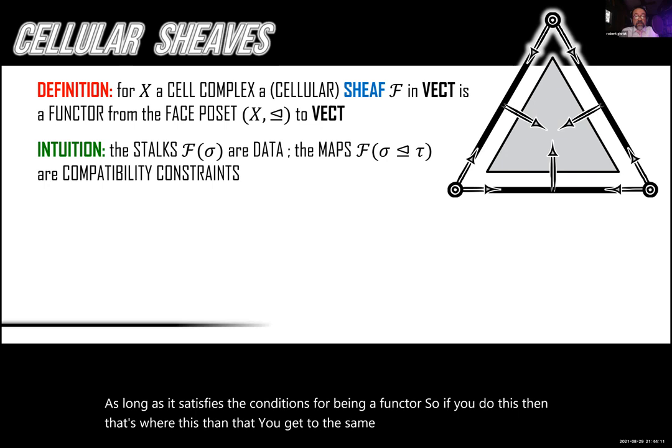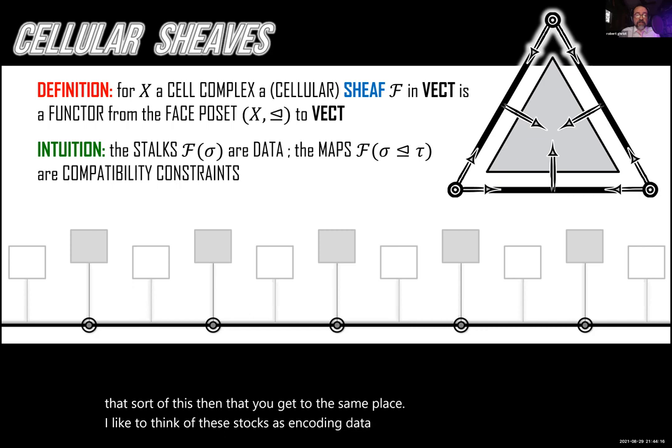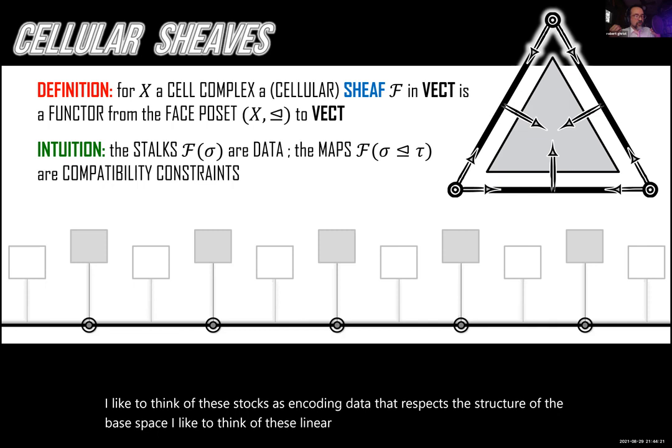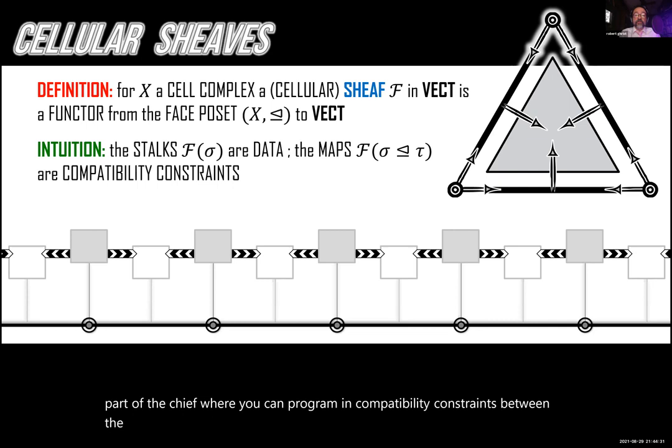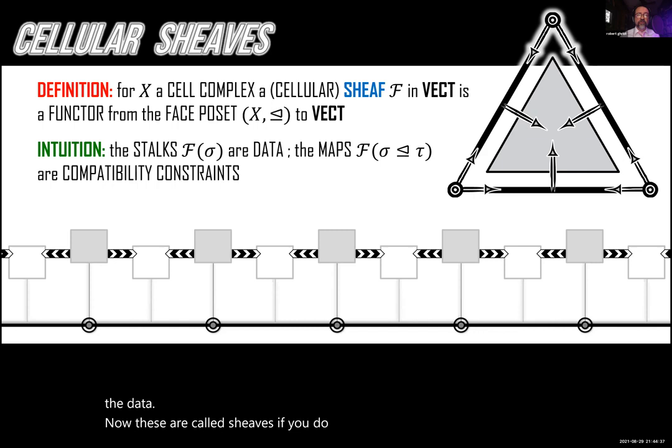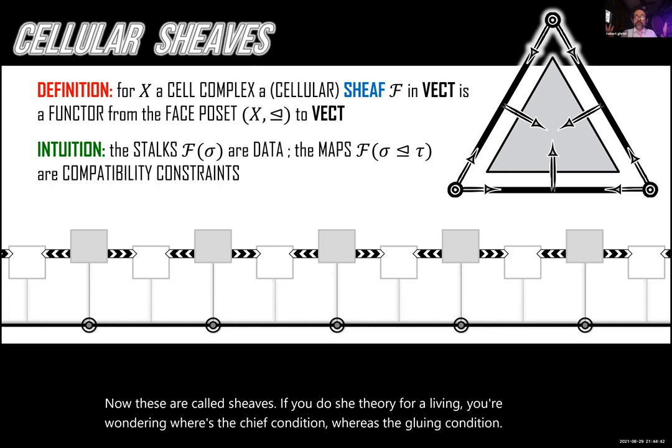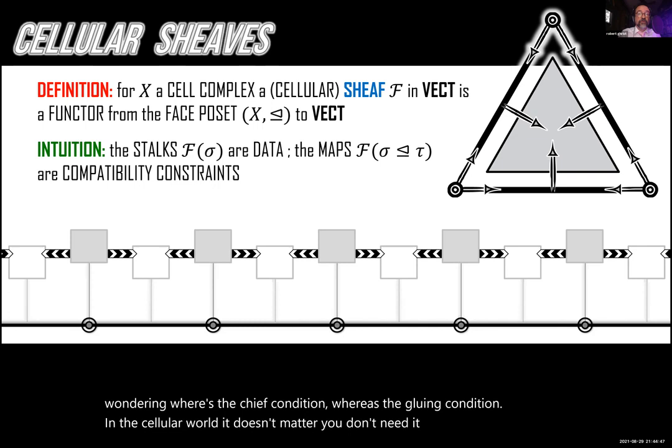I like to think of these stalks as encoding data that respects the structure of the base space, and these linear transformations as the programmable part of the sheaf — where you can program in compatibility constraints between the data. In the cellular world, the sheaf condition, the gluing condition, is superfluous — you don't need it. So we can avoid most of the complexities of traditional sheaves over a topology of open sets.